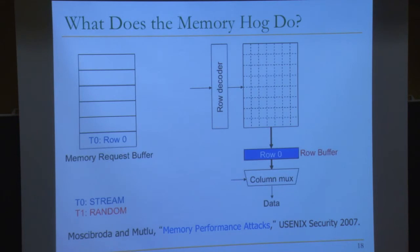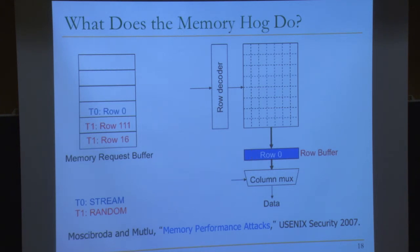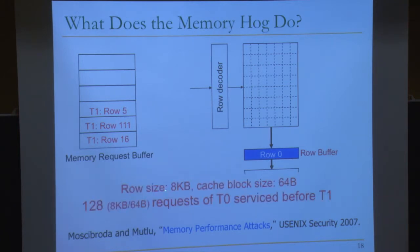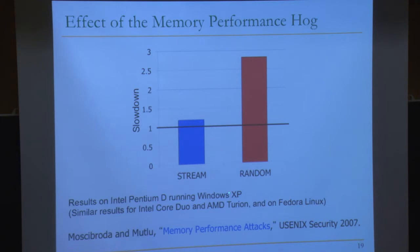If you run these two applications together, the streaming application keeps generating requests to the currently open row. The memory controller keeps prioritizing those requests because the random application's requests go to a different row — they don't hit in the row buffer. As a result, you get starvation. With a row size of 8 kilobytes and a cache block size of 64 bytes, 128 requests of the streaming application are serviced before any single request of the random access application.